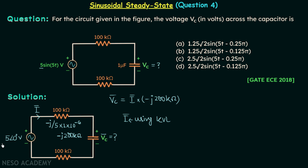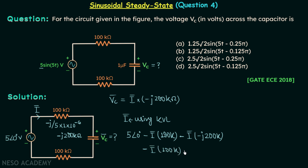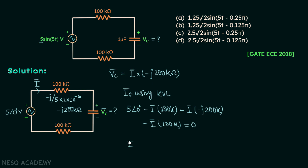Starting KVL from here: plus 5∠0° minus I phasor × (minus j200 kΩ) minus I phasor × (minus j200 kΩ) minus I phasor × 200 kΩ minus I phasor × 200 kΩ equals zero. When you simplify this, I phasor equals 1∠0° divided by 40√2 ∠-45°.